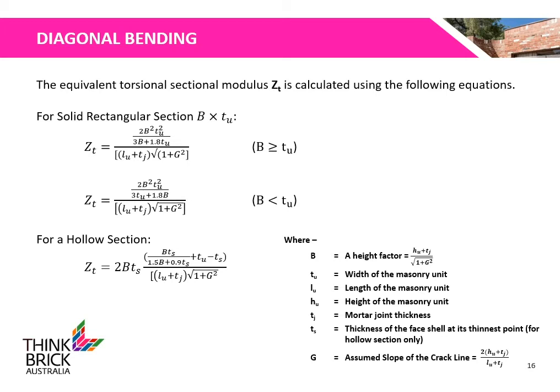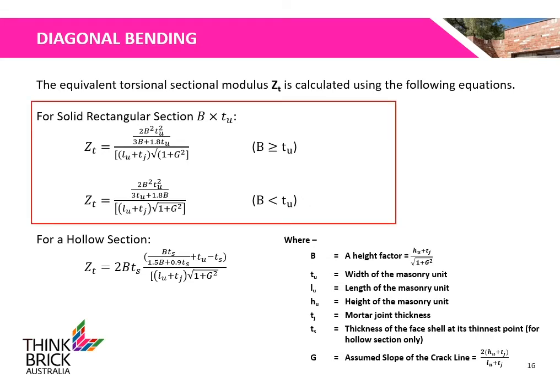The equivalent torsional section modulus Zt is calculated using the equations below. Solid rectangular section and hollow section equations shall be used appropriately, where B is the height factor, Tu is the width of the masonry unit, Lu is the length of the masonry unit, Hu is the height of the masonry unit, TJ is the mortar joint thickness, TS is the thickness of the face shell at its thinnest point, and G is the assumed slope of the crack line. Brick units are typically treated as a solid rectangular section.